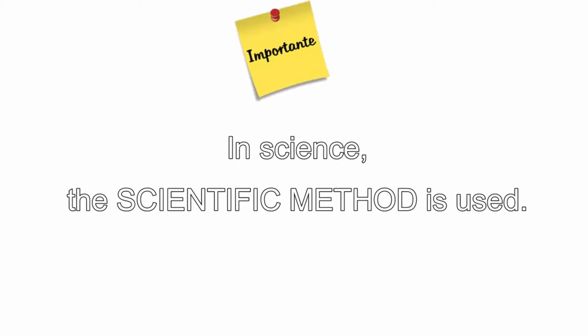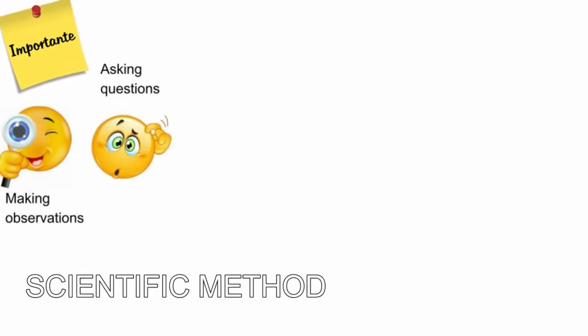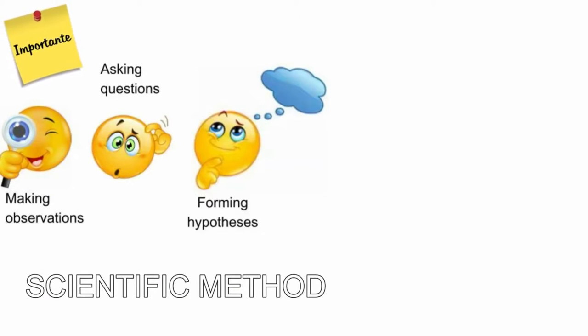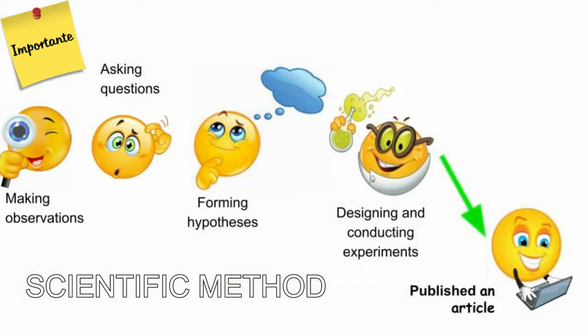In science, the scientific method is used. The scientific method is a process based on making observations, asking questions, forming hypotheses about what and why something occurs, and finally designing and conducting experiments in order to assess the predictions. When this process leads to the discovery of novel information, it can be published for others to review and utilize.